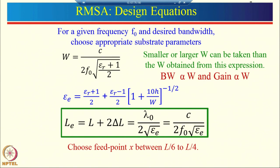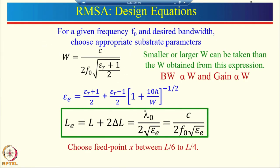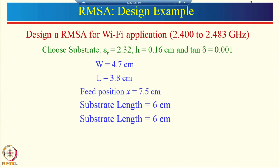In the previous lecture you already know how to calculate the length and width of a microstrip antenna. I have given here the expression of length and width. In this particular lecture we will try to design a microstrip antenna for the Wi-Fi frequency band, that is 2.4 to 2.483 gigahertz. Using the expression L equals C upon 2F₀ times the square root of (εᵣ + 1)/2 and other expressions given in this slide, you can calculate the dimensions. The width of the patch will be 4.7 cm, the length of the patch will be 3.8 cm, and the substrate length and width we will take as 6 cm.